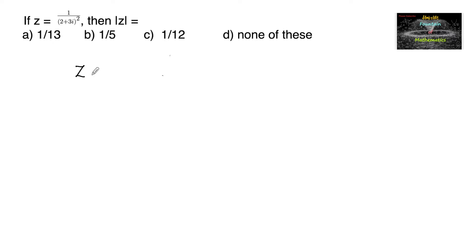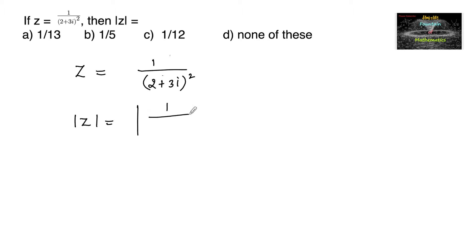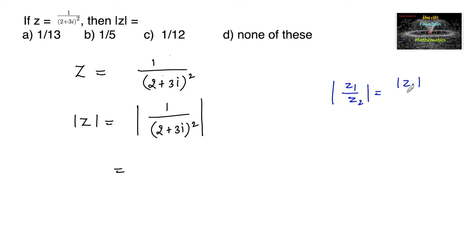If z is equal to 1 upon (2 + 3i) whole square, then modulus of z is equal to mod of 1 upon (2 + 3i) whole square. Since we know modulus of z1 upon z2 is equal to modulus of z1 upon modulus of z2, we can write 1 upon modulus of (2 + 3i) whole square.